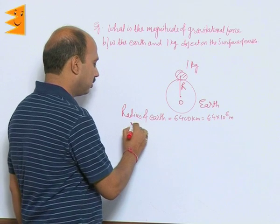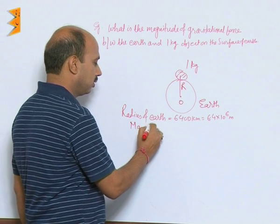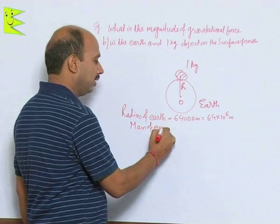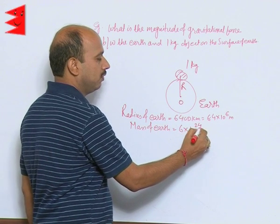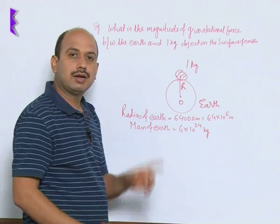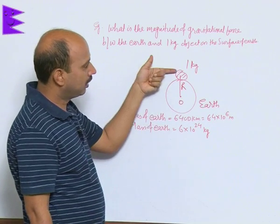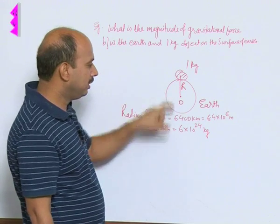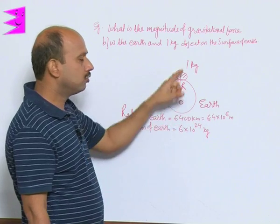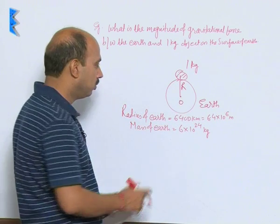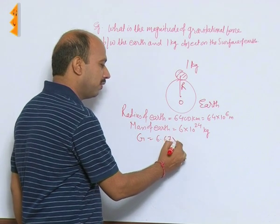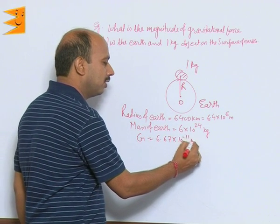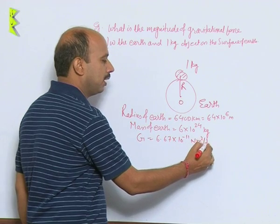Similarly, mass of Earth will also be given to you: 6 into 10 raised to power 24 kg. There are two objects, one is Earth and one is this. Distance between them is given to you, masses of both objects are given to you. Value of capital G, we can use 6.67 into 10 raised to power minus 11 Newton meter squared per kg squared.